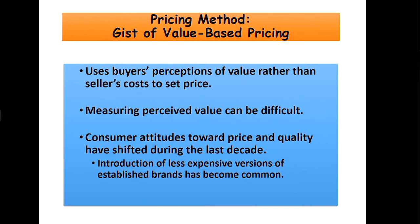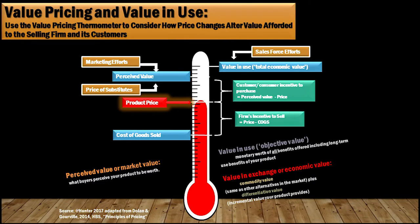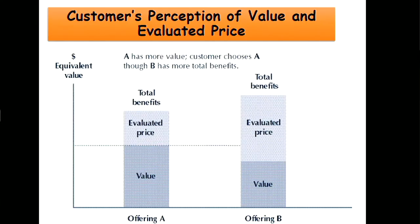The gist of value-based pricing is going out to the market and asking how much would the market pay, estimating back to what the market would pay for the product, and basing your pricing on that — not so much on what it costs. You can see product price as a lever you move up and down, affecting the costs associated with the firm considering the sale and the customer considering the sale, overlaid with concepts of value of use and value of exchange.